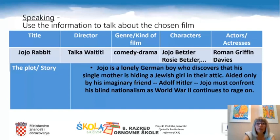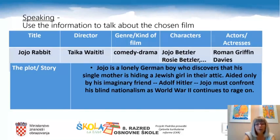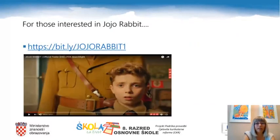Jojo Rabbit is a comedy drama directed by Taika Waititi. Jojo Betzler, the main character, portrayed by Roman Griffin Davis, is a lonely German boy who discovers that his single mother, Rosie Betzler, acted by Scarlett Johansson, is hiding a Jewish girl in their attic. Aided only by his imaginary friend Adolf Hitler, Jojo must confront his blind nationalism as World War II continues to rage on. If you got interested in the movie, copy the link bit.ly/jojorabbit1 in your browser and watch the trailer — after watching it, I hope you'll be interested in the film even more.